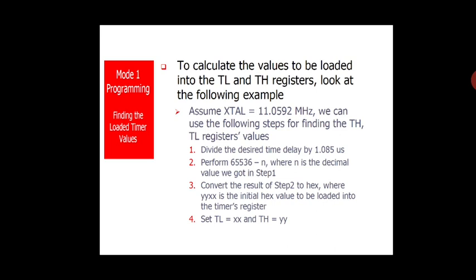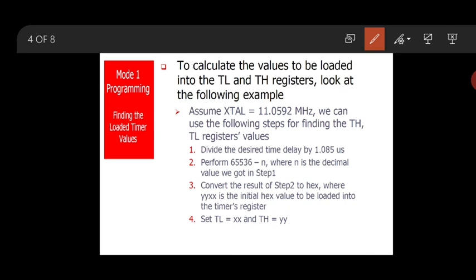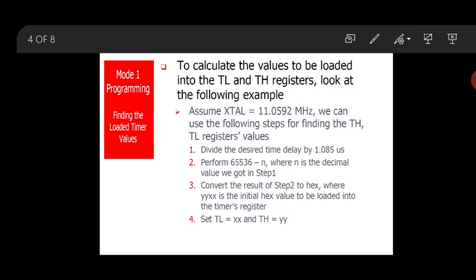Step 1: Divide the desired time delay by 1.085 microseconds. For example, if you require X milliseconds of delay, compute X milliseconds divided by 1.085 microseconds. You will end up with a number N after this division. This N is the count of 1.085 µs intervals needed for the required delay.